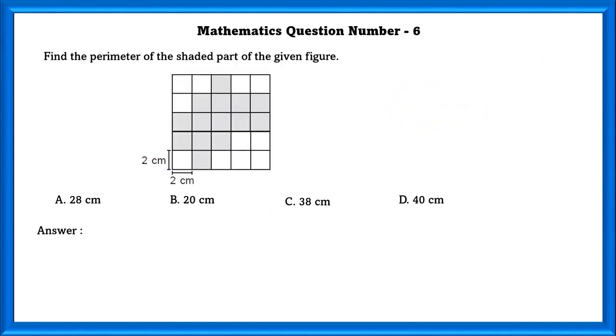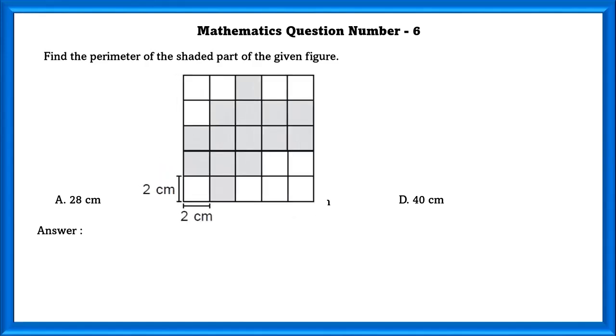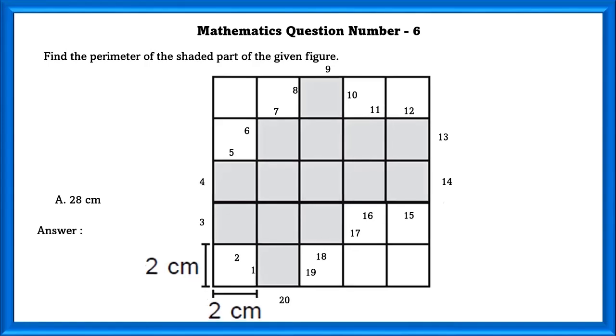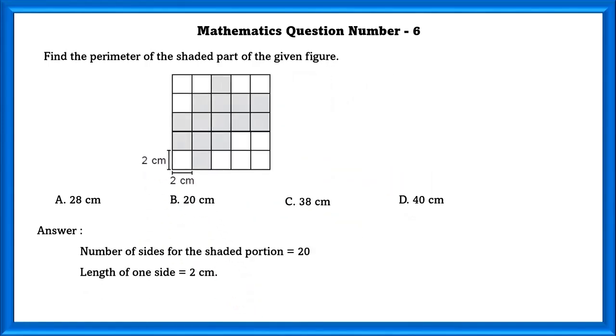Mathematics Question Number 6: Find the perimeter of the shaded part of the given figure. As we can see, 1 square is 2 by 2 centimeters. First, we are going to see how many sides are there in the given figure. As we can see, there are 20 sides in the given figure. Length of 1 side is equal to 2 centimeters. Therefore, the perimeter is equal to 20 into 2, which is equal to 40 centimeters.